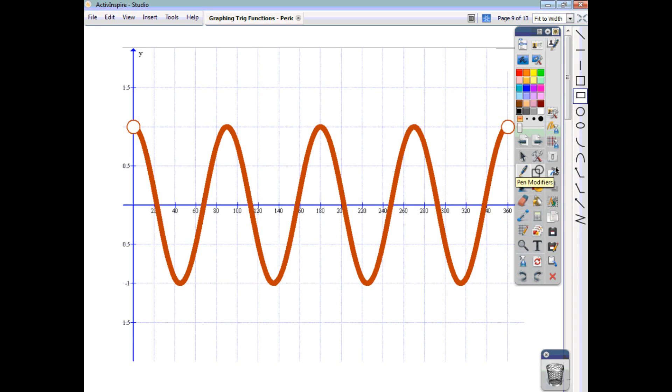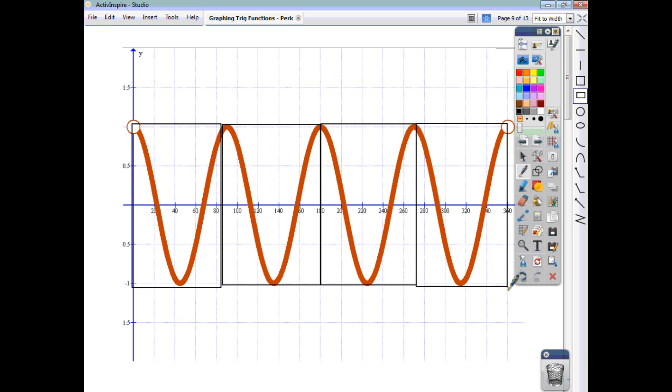What about this one? What about the non-repeating part of the function? Well, you've got 1, 2, 3, 4 cosine troughs, if you like, within 360.